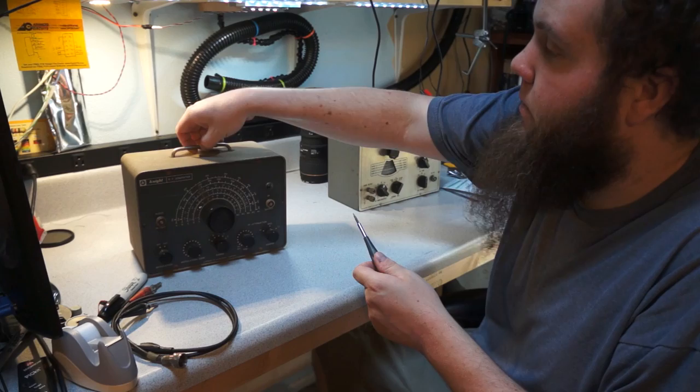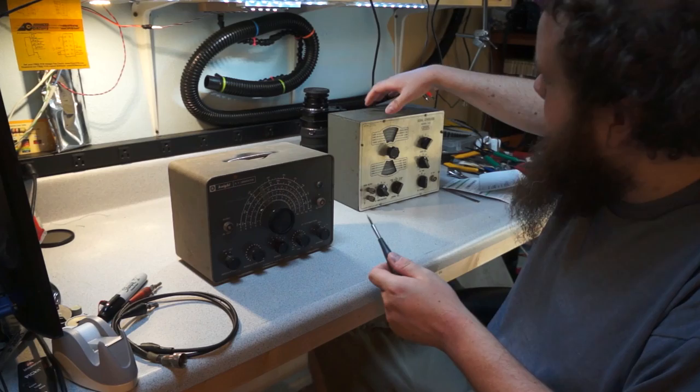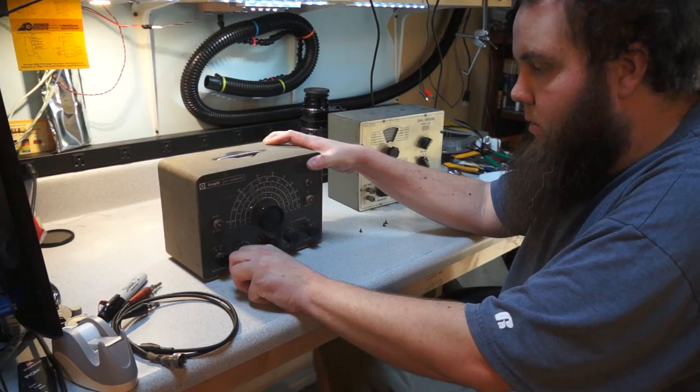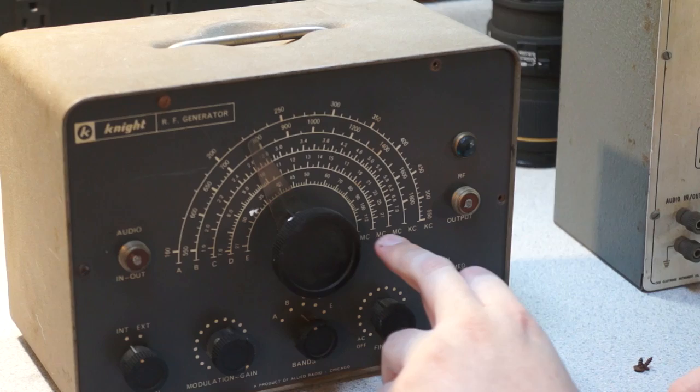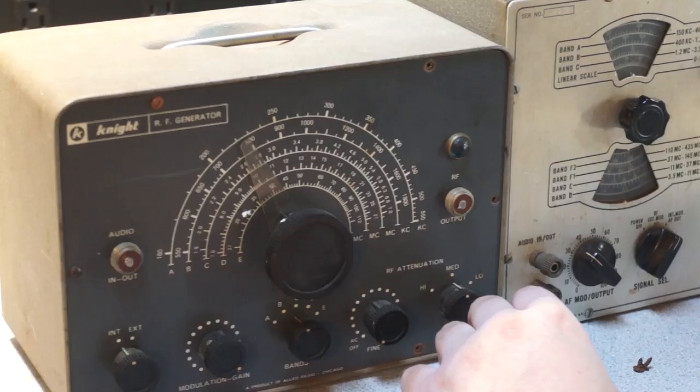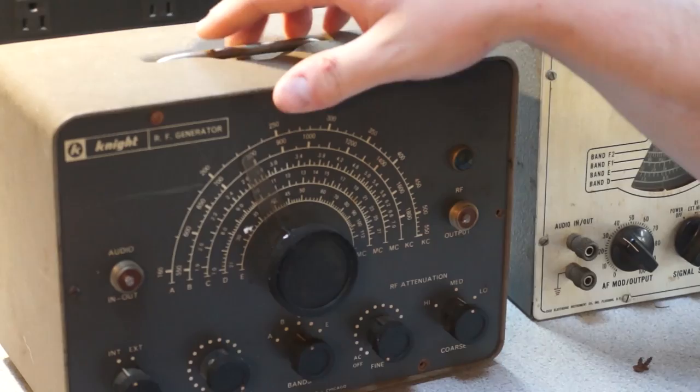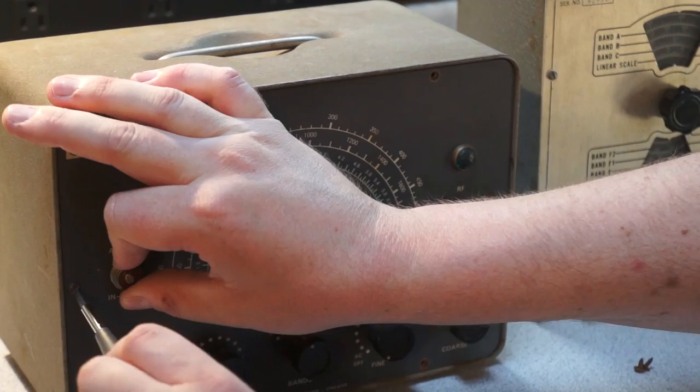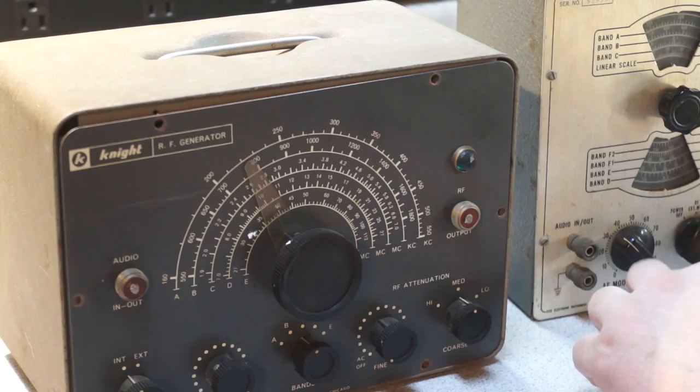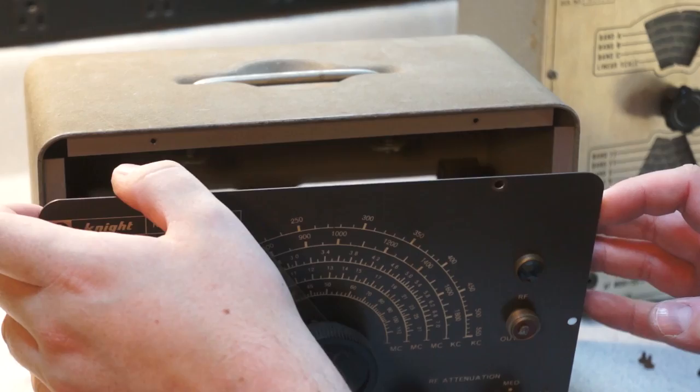So, this one has this cool spring-loaded pull-out metal handle. The other one, it appears somebody has removed the handle. One thing I'm interested in is that if you look at them, they're labeled MC MC MC KC KC, so this is megacycles and kilocycles. And that's because the usage of hertz as a term for frequency is actually surprisingly recent. We started using hertz, I think, sometime in the 60s or the 70s. And before that, it was megacycles and kilocycles and cycles per second instead of hertz.